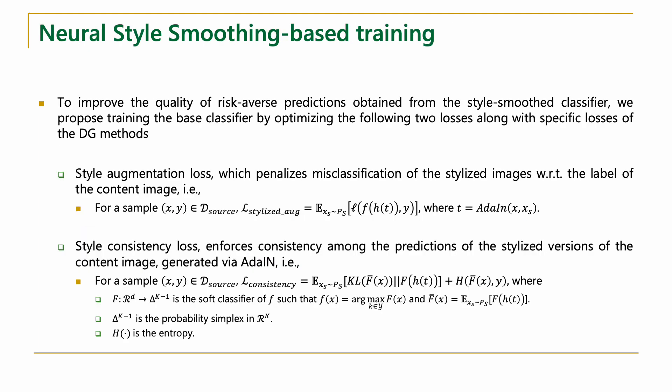To improve the quality of risk-averse predictions, we also propose to train the DG models with two additional losses. The first is the style augmentation loss, which penalizes misclassification of stylized images. The second is the style consistency loss, which enforces consistent predictions between different random restylizations of the image. These losses are agnostic to the DG method being used for training and can be combined seamlessly with existing and new training methods to improve risk-averse predictions from DG models.